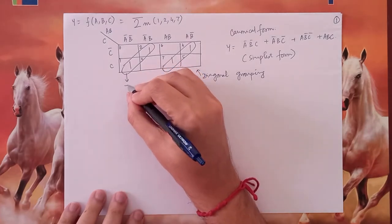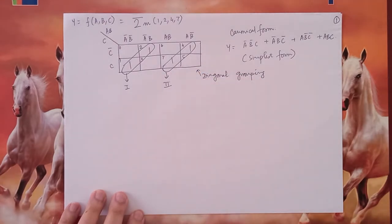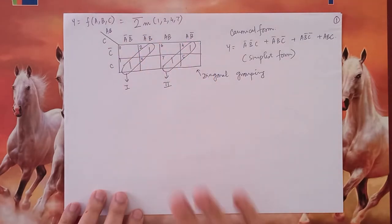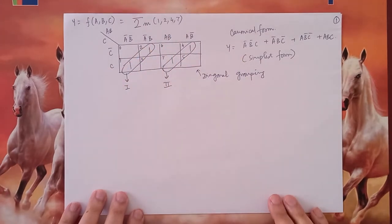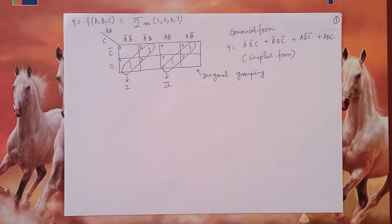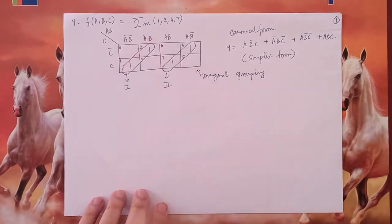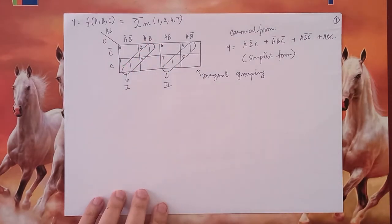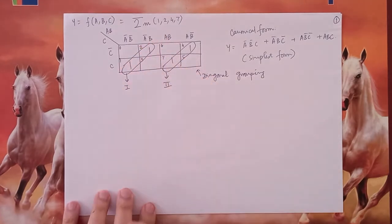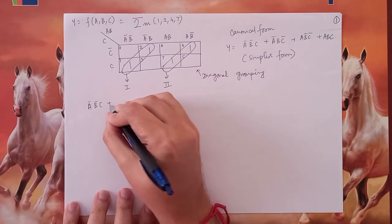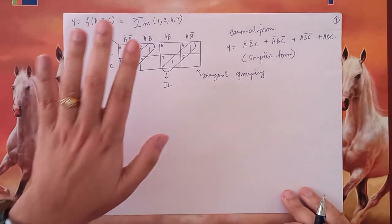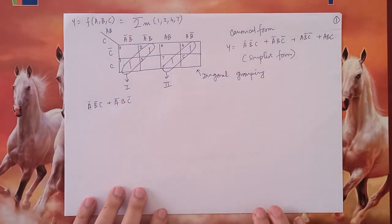Suppose I group these two ones diagonally, and these two ones also I group diagonally. This is called a diagonal group. Let us call this group number one and this group number two. Please remember that diagonal grouping is technically not a group, because if you see, there are no common terms that would convey much. As you know, in a group size of two in a three-variable K-map, I should end up with a product term of at least two variables. But here the only common term is A-bar, and we cannot use that.